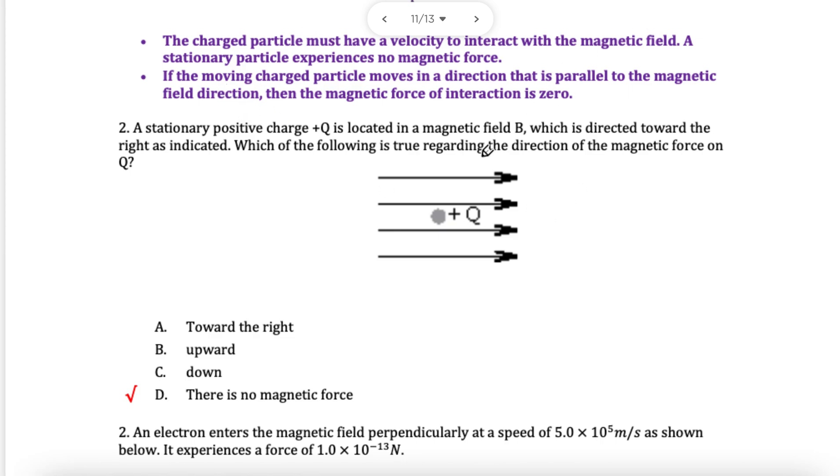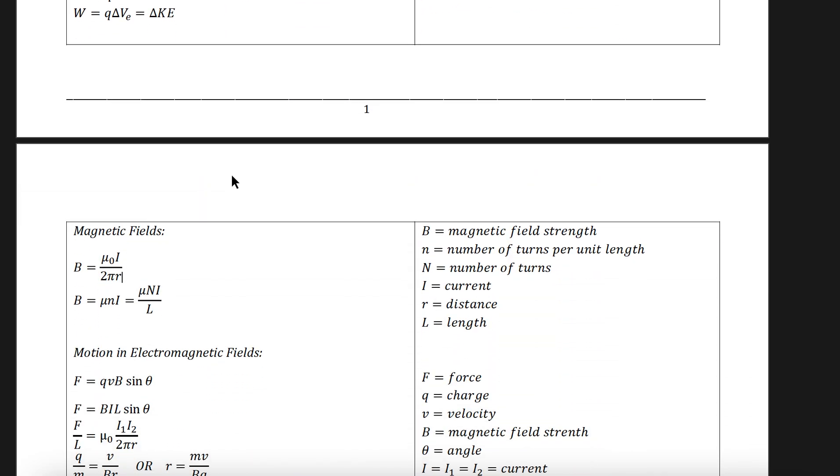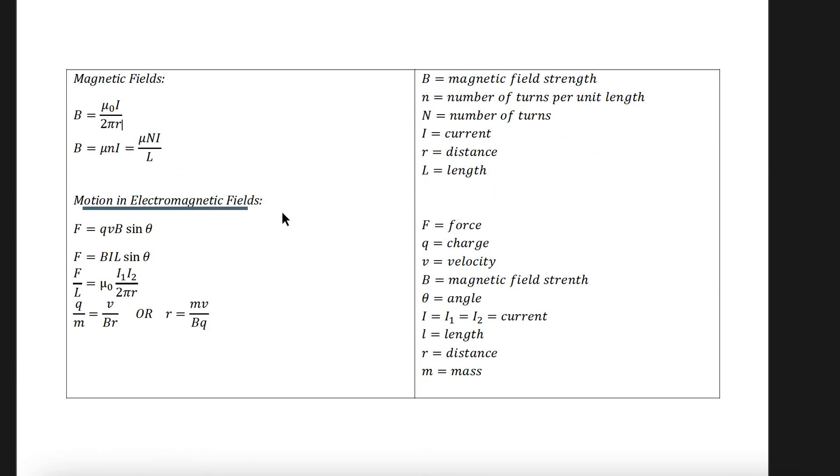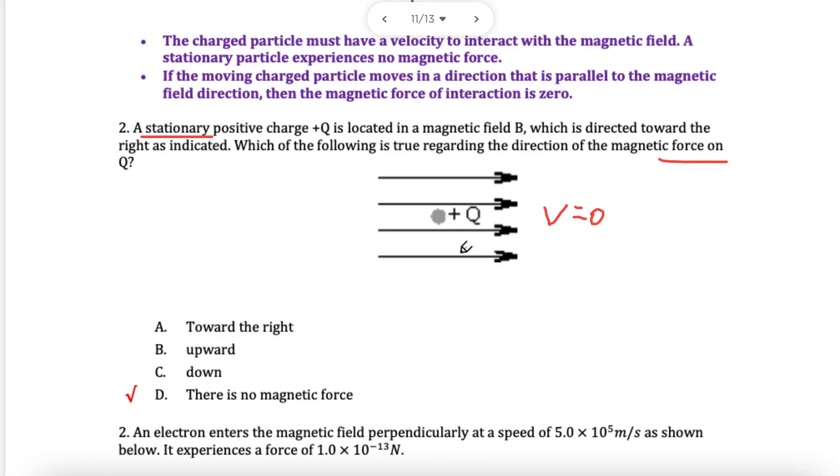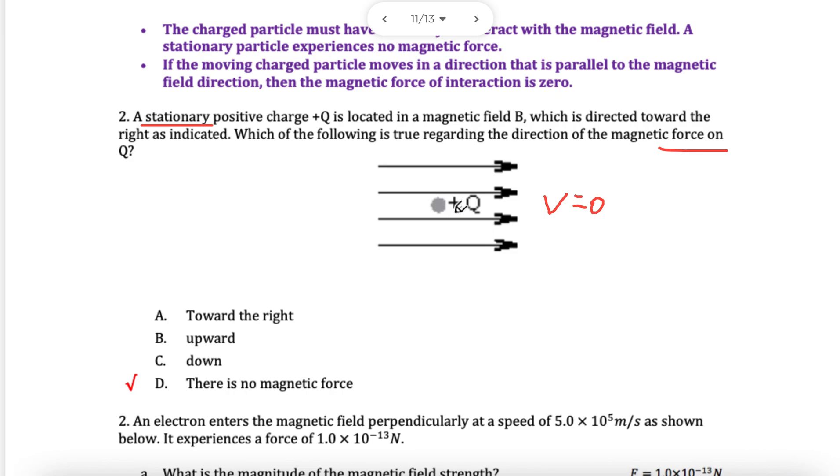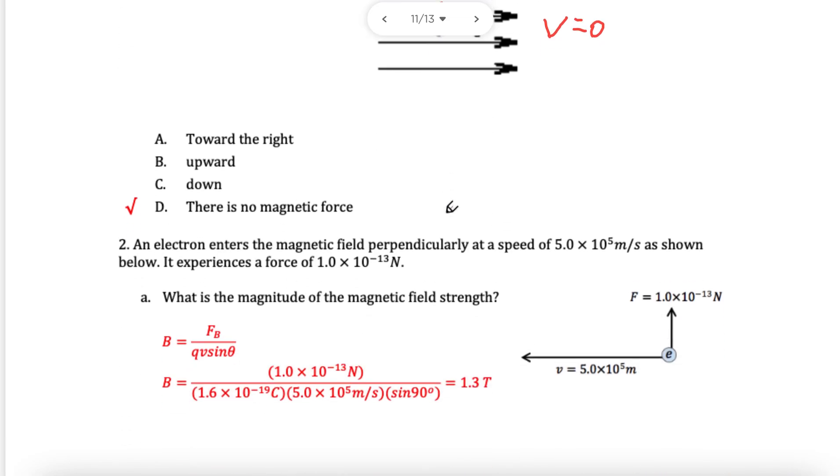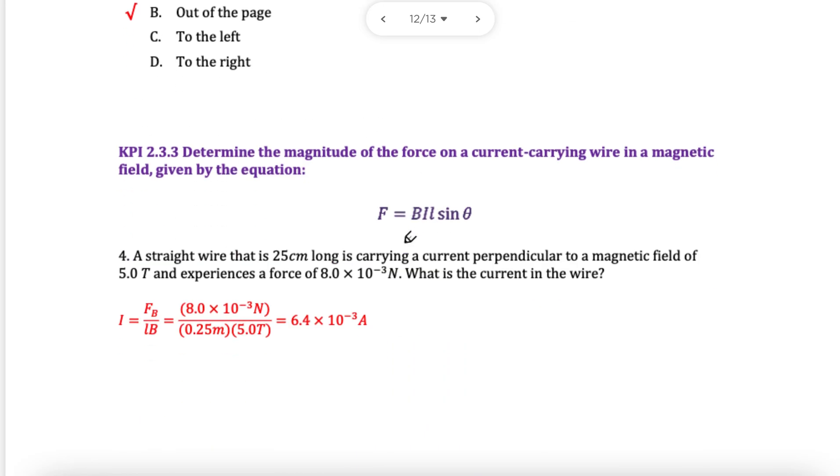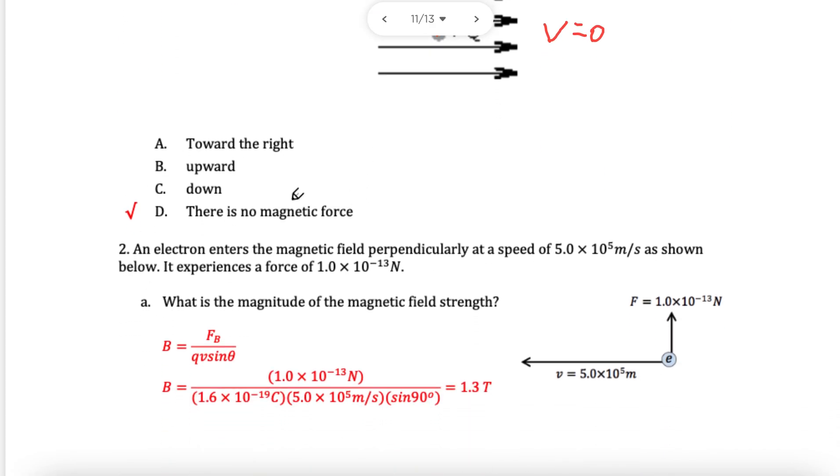Question two. Stationary positive charge inside a field, which is true regarding the direction of force? We have a charge in a field. There's a little trick here. It's a stationary charge. There is a formula to find the force of a charge in a field. Q, V, B, sine theta. We have to have a V, there must be a speed. If it's stationary, there is no speed. V equals zero, which means if I calculate anything, it will become zero. So there is no force.